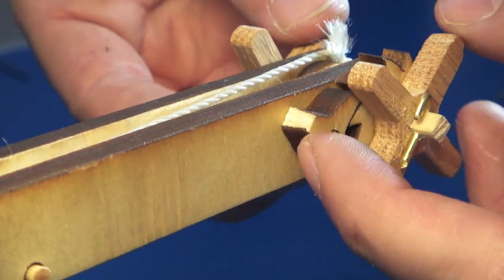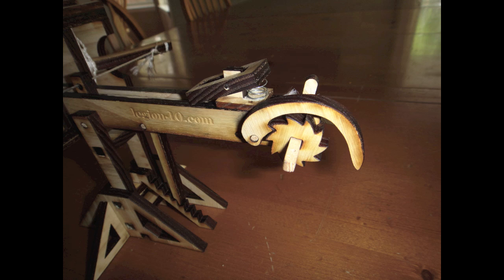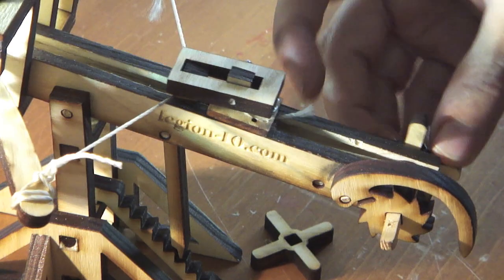The pawl engaging the ratchet on version 5 didn't work very well and it broke. So on version 6, I made the material thicker and I extended it backward and down so the weight of that pawl would engage with the ratchet much better.